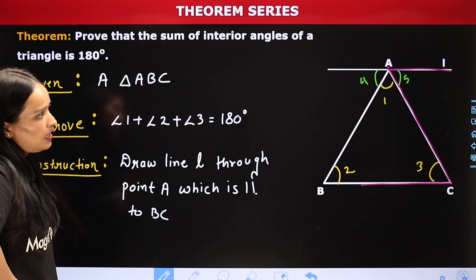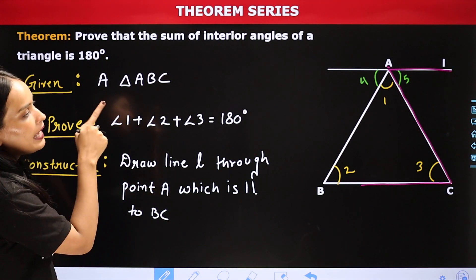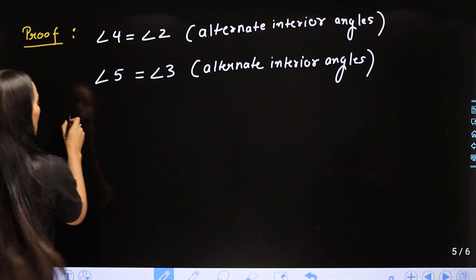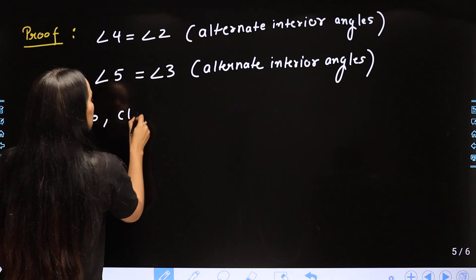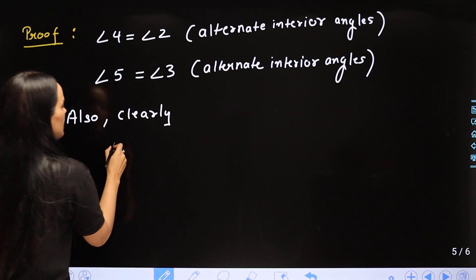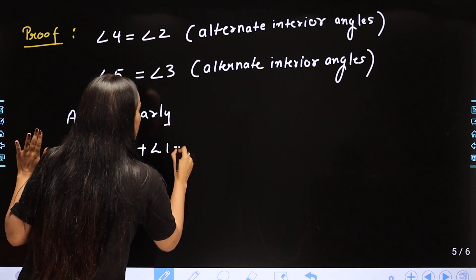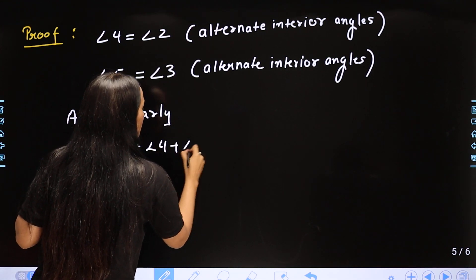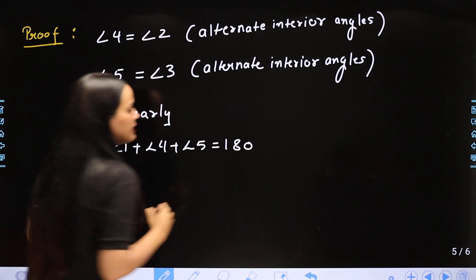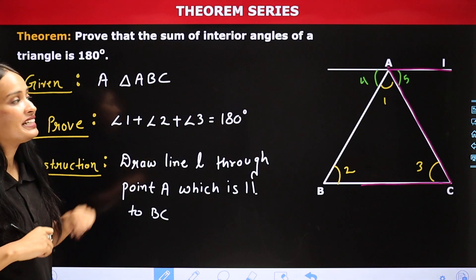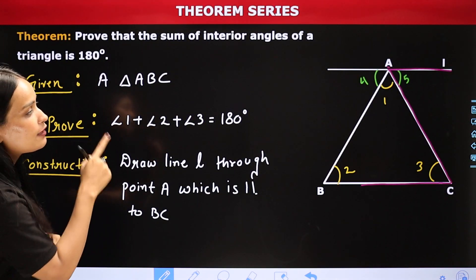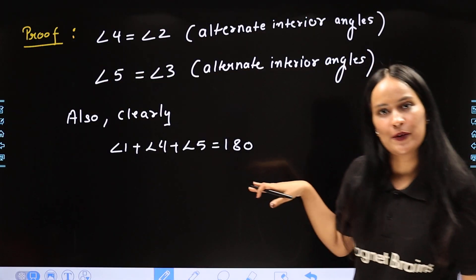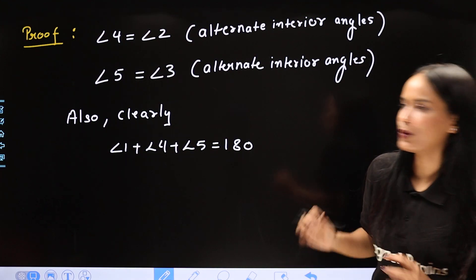अब क्या करेंगे? Angle 4 plus angle 1 plus angle 5 किसके बराबर होगा? Maths में clearly: angle 1 plus angle 4 plus angle 5 is equal to 180 degree। क्यों? क्योंकि एक straight angle दिख रहा है आपको — straight angle 180 degree का होता है। ये सभी angles मिलकर एक straight line पर हैं इसलिए 180 degree के बराबर हैं।